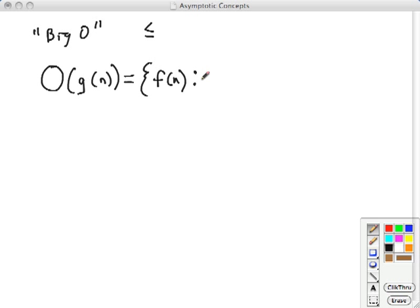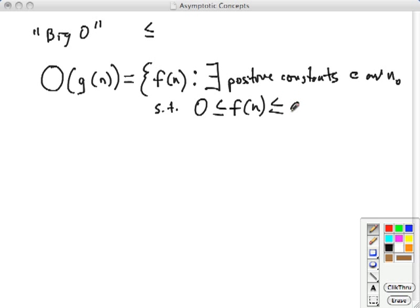This dot dot means such that. Such that there exists, that's shorthand for there exists, positive constants, c and n naught, such that, I'm going to start abbreviating here, this is true for all n greater than or equal to n naught.